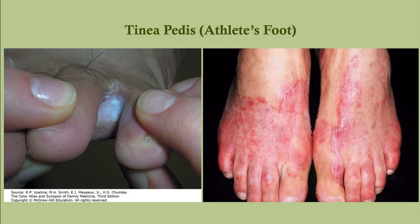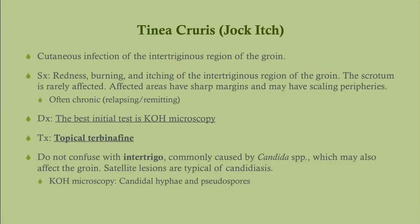A similar infection of the hands is called tinea manum, though it's less common and treated the same way. The images show the acute presentation — the rash between the fourth and fifth digits — and the moccasin-like distribution affecting the dorsum and soles of the foot when the infection progresses untreated.